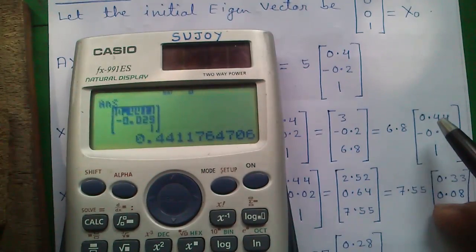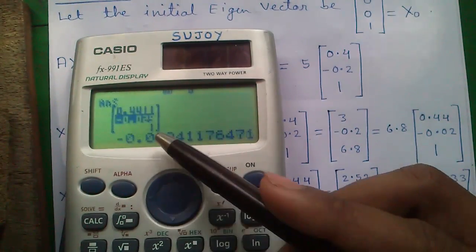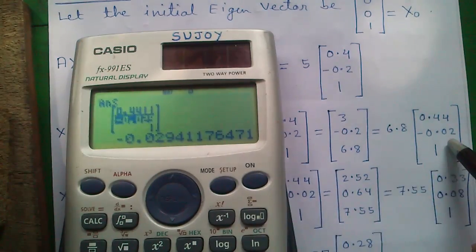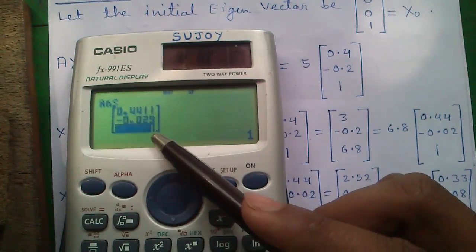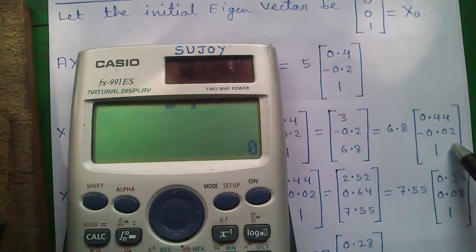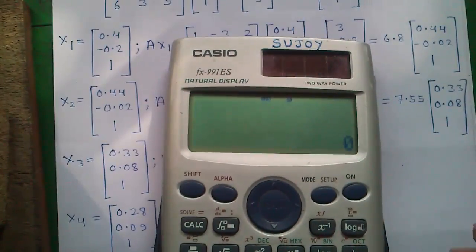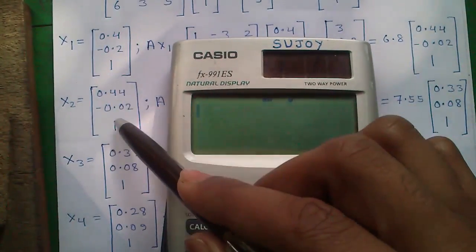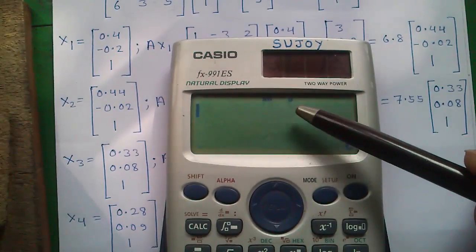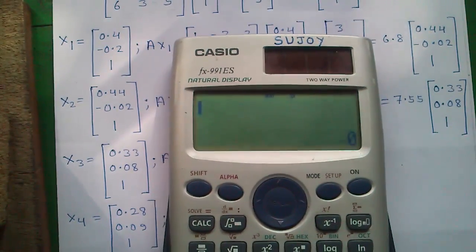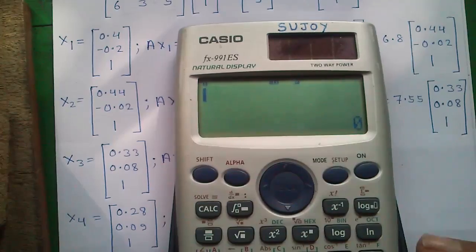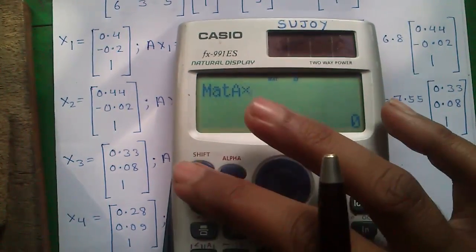The result is 0.44, -0.02, and 1. This will become our x2 value. The good part is you don't have to enter it again; it is already stored in the matrix answer variable. Now we will do matrix A into x2.